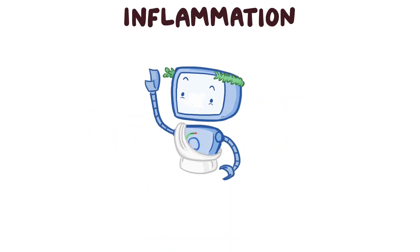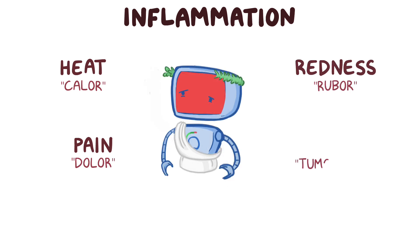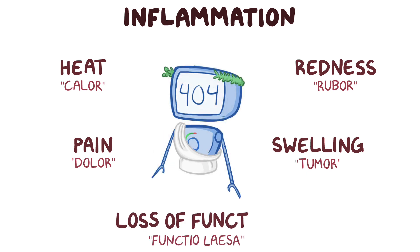Inflammation classically describes four key signs, each of which have a Latin derivation: calor or heat, dolor or pain, rubor or redness, and tumor or swelling. Sometimes these four signs combine to cause a fifth sign, which is functio laesa, or temporary loss of function due to pain or swelling.